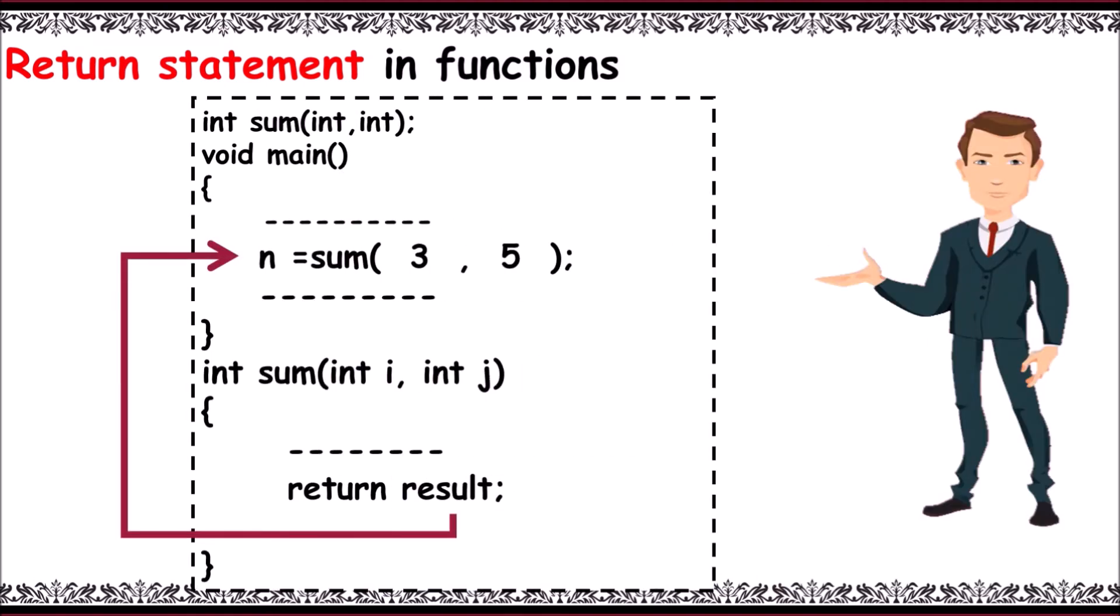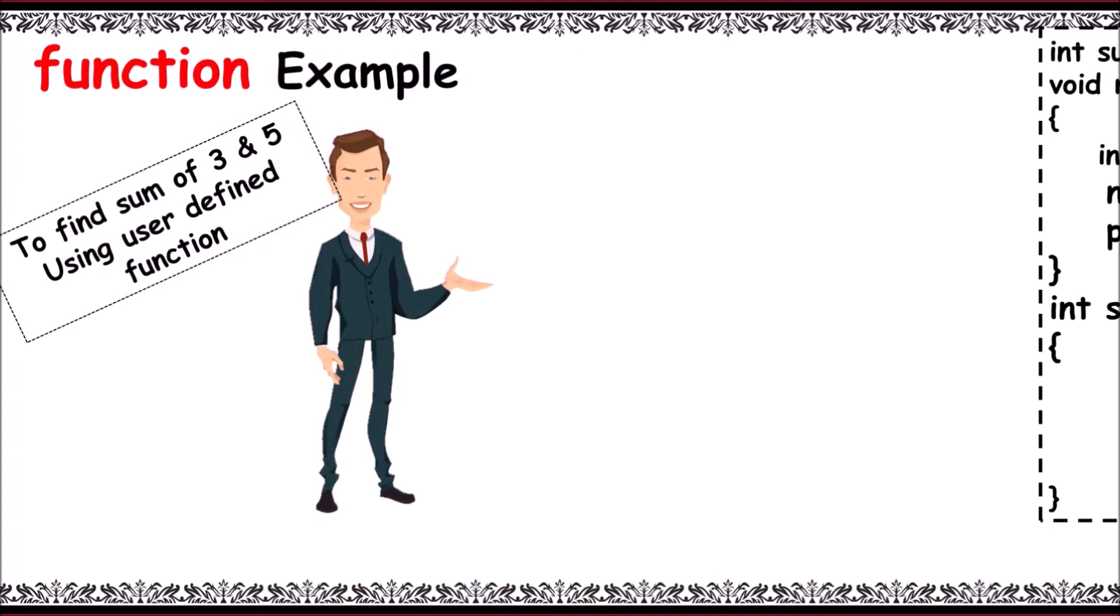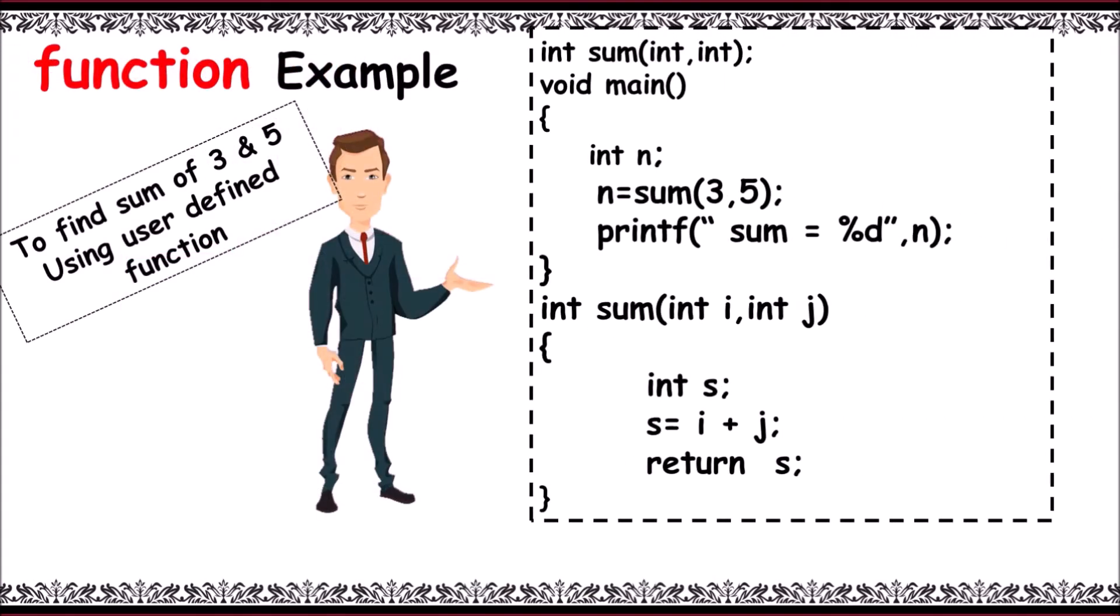Now let's write a program using user-defined function to find sum of 3 and 5 using this function. Here int sum(int, int) is a function prototype. By this we can say that a user-defined function named sum exists in our program. Next main, and next declare n. Function call n equals sum(3, 5) calls sum function with two parameters 3 and 5.